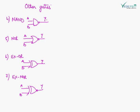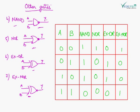These are some other gates: NAND gate, whose symbol is an OR gate with a bubble; NOR gate, which is an OR gate with a bubble; and also XOR gate and XNOR gate.